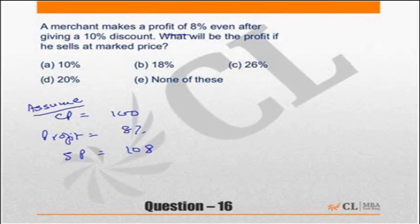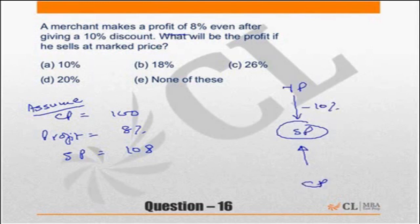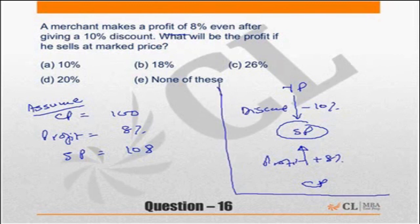What is the mark price? The mark price is such that giving a discount of 10% on it gives you the selling price. So mark price minus 10% discount should equal the selling price, which we obtain from cost price plus 8% profit. Both must be equal.